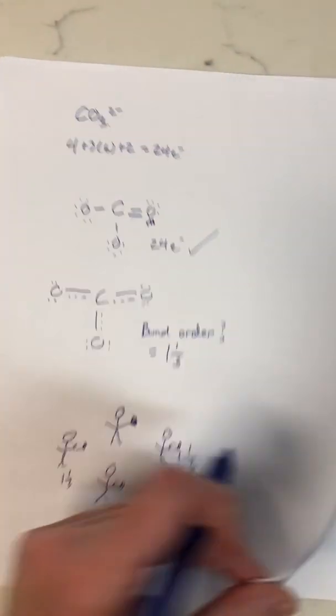What about the other example we had? We had something that had an N, an O, a C, and a negative charge. How do we put this together?